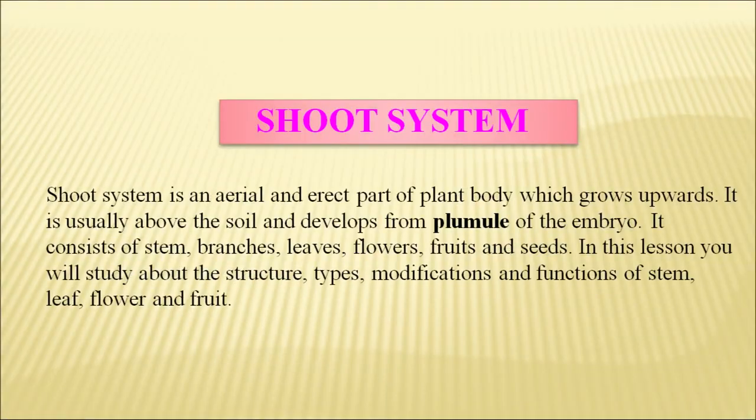So what is the shoot system? It is the stem, branches, leaves, flowers, fruits and seeds. Today in this discussion we shall study about the structure, types, modifications and functions of the stem, and also the functions of leaf, flower and fruits.